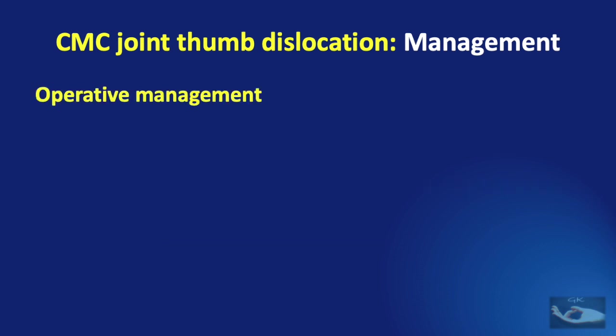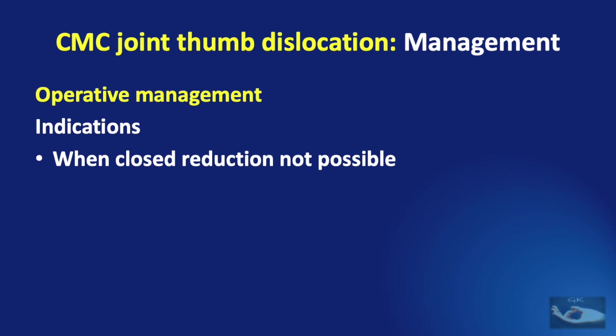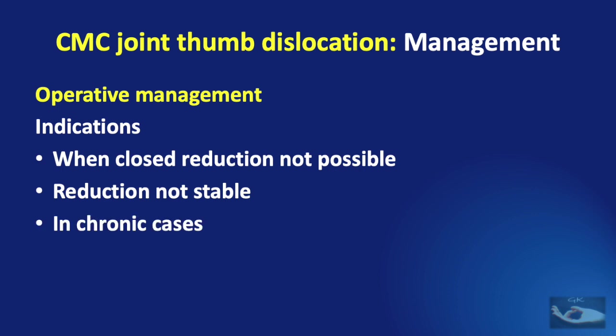The indications for operative management of CMC joint dislocations of the thumb are: when closed reduction is not possible, when closed reduction has been achieved but the joint is not stable after reduction, and in chronic cases.